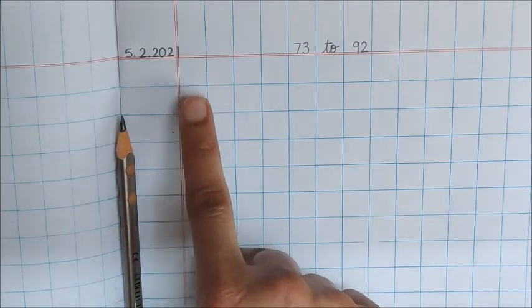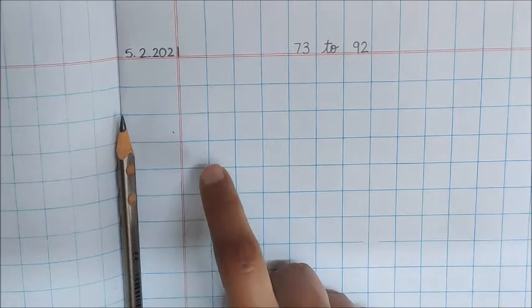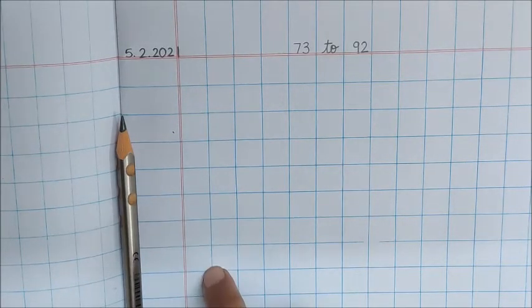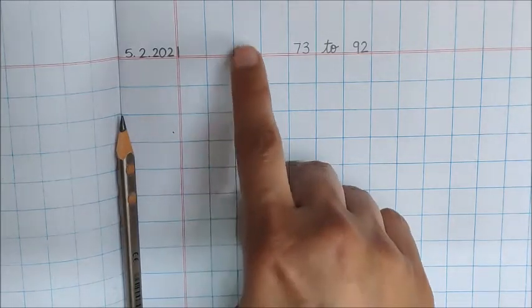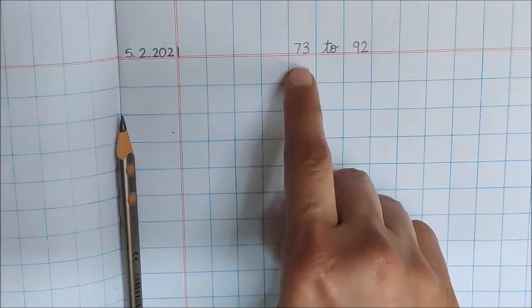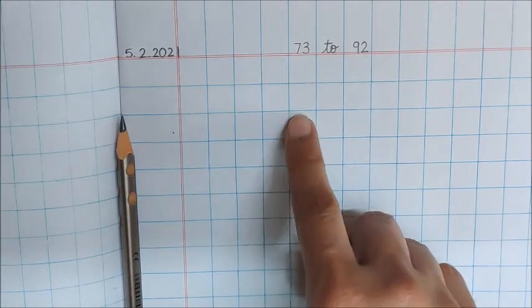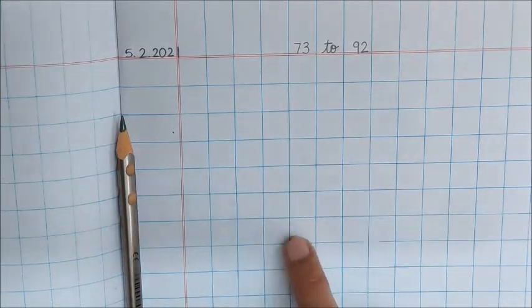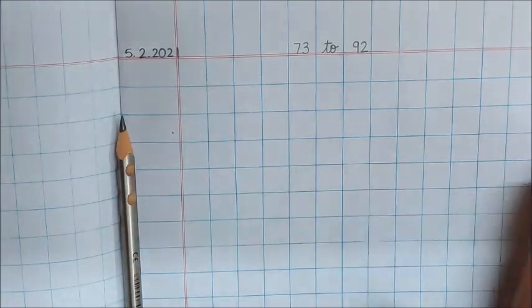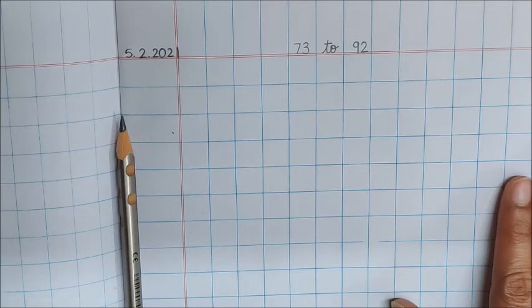Write the numbers 73, 74, 75, 76, 77, 78, 79. Then leave one box, put a dot. Then again write down TO, and then continue writing 80, 81, 82, 83, 84, 85, 86, 87, 88, 89 till 92. You have to do writing of numbers.